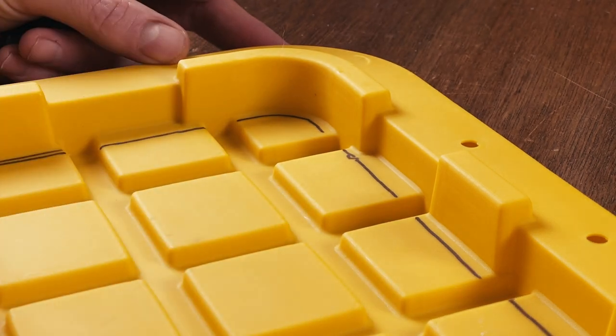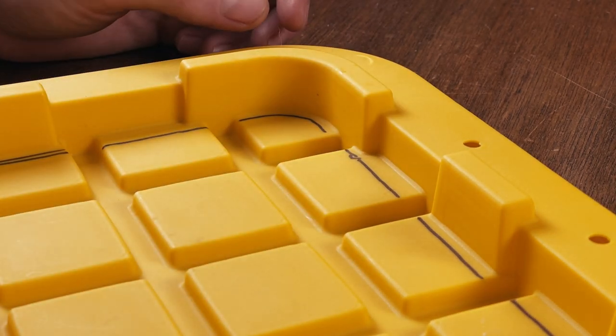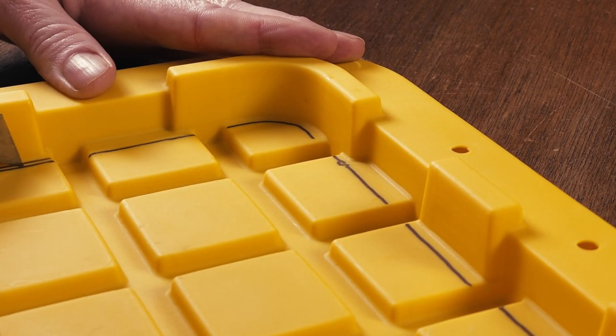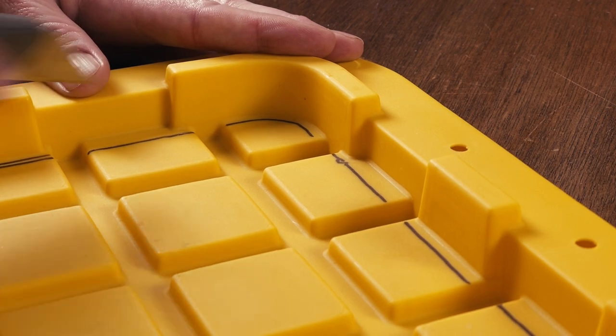I went ahead and made a mark all the way around the inside of this lid where I want to cut. I'm just going to cut that section of the lid out using a razor blade and it's going to take three or four shallow passes to cut this lid out but it's actually really easy to do.